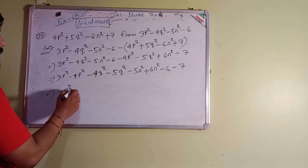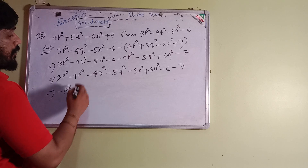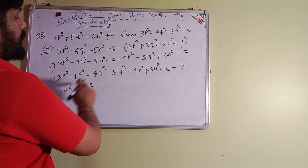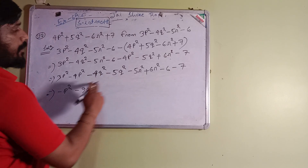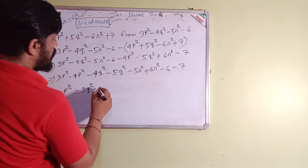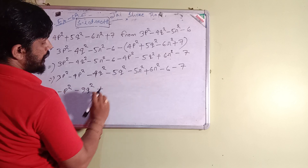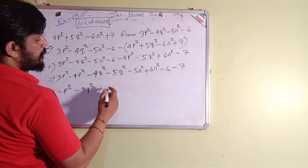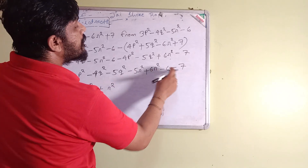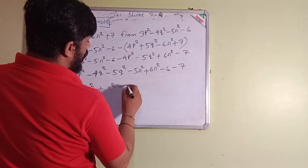3p² minus 4p²: different signs, subtract — gives minus p². Minus 4q² minus 5q²: same sign, add — gives minus 9q². Minus 5r² plus 6r²: different signs, subtract, 6 is greater so plus sign — gives plus r². Minus 6 minus 7: same sign, add — gives minus 13. So the answer to number 17 is minus p² minus 9q² plus r² minus 13.